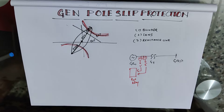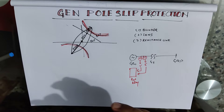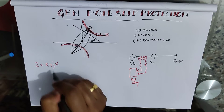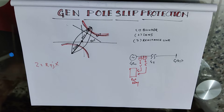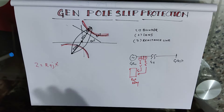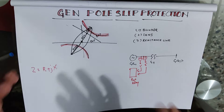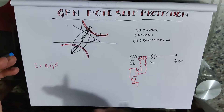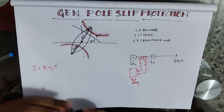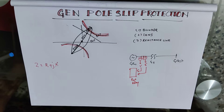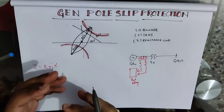The relay is present in the generator relay panel. From this voltage and current, the generator relay will calculate the impedance — impedance is nothing but the summation of resistance and reactance. If that impedance enters the locus of pole slip protection, stays in the locus for a particular period of time, and then comes out, the relay will count it as a slip. If the number of slips experienced by the relay is more than the setting, then the relay will issue a trip command. This is how pole slip protection operates.